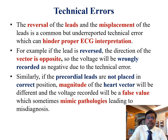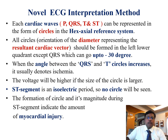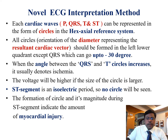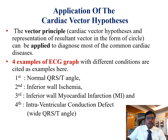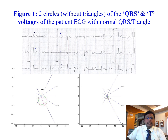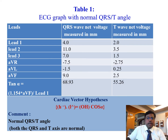Novel ECG interpretation method: each wave can be represented in the form of circles. When the angle between the QRS and T circles increases, it denotes ischemia. The voltage will be higher if the size of the circle is larger. The ST segment is an isoelectric period, so no circle should be formed — the formation of a circle denotes the amount of myocardial injury. QRS and T circles are constructed for an ECG graph; if both are in the normal axis, the values are taken from the reference table, indicating a normal QRS-T angle.